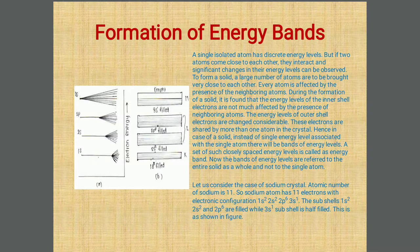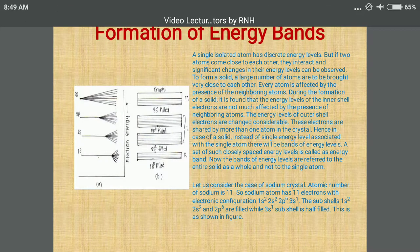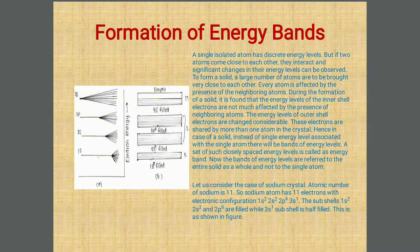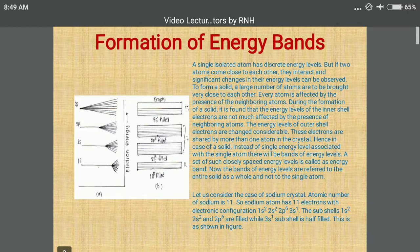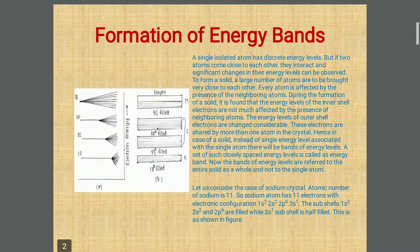The energy band is related to the material as a whole, not to a single atom. Consider the example of sodium with atomic number 11. Its electronic configuration is 1s² 2s² 2p⁶ 3s¹. The first three subshells are completely filled and the last one is partially filled, as shown in the figure. Figure A represents the influence on energy levels going from inner shells to outer shells.